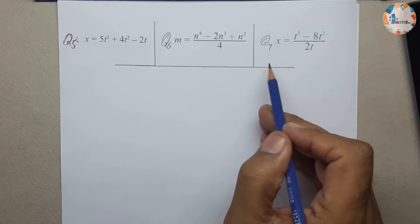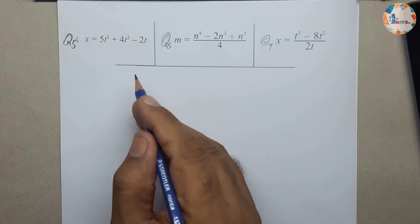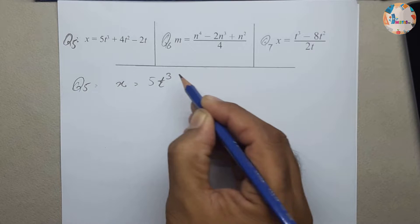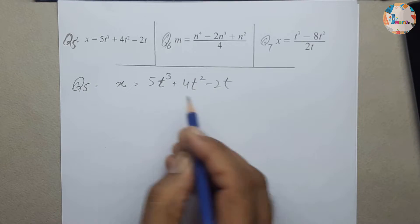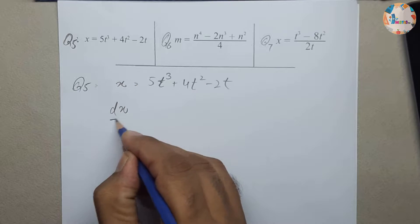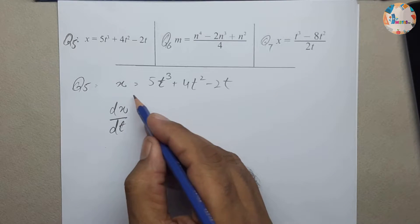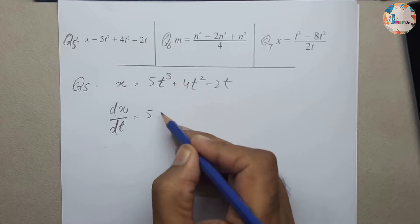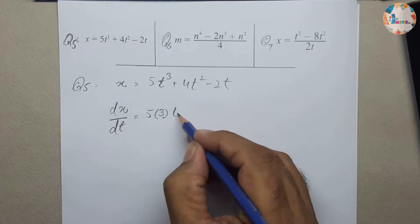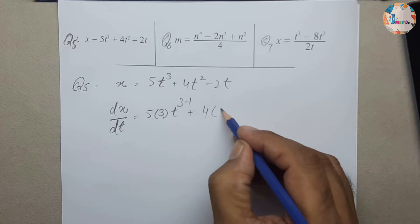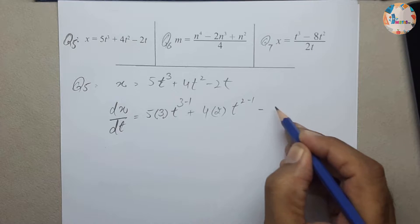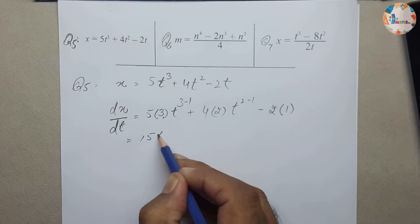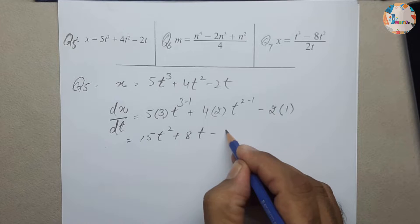Questions 5, 6, and 7 are a little more complicated for practice. For question 5, x = 5t³ + 4t² − 2t. We take dx/dt because the variable is t: dx/dt = 5·3·t^(3-1) + 4·2·t^(2-1) − 2·1 = 15t² + 8t − 2.